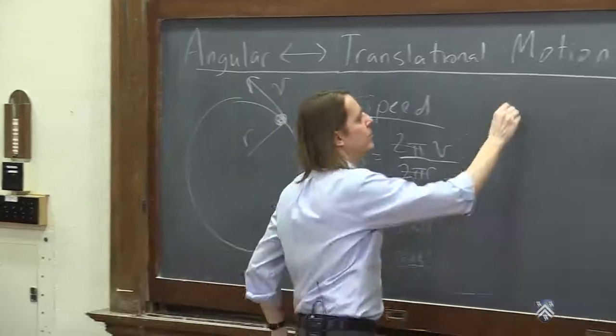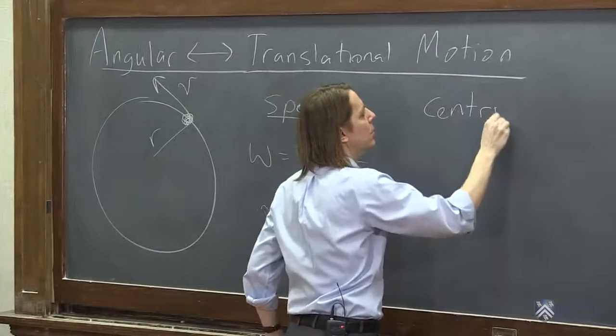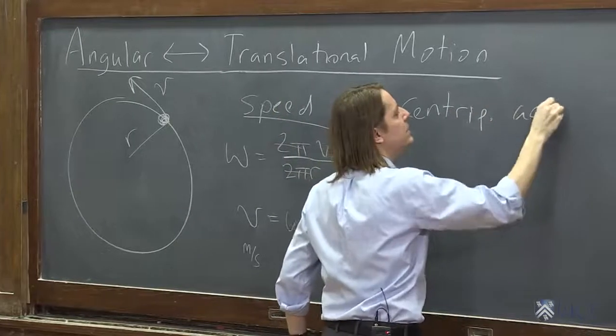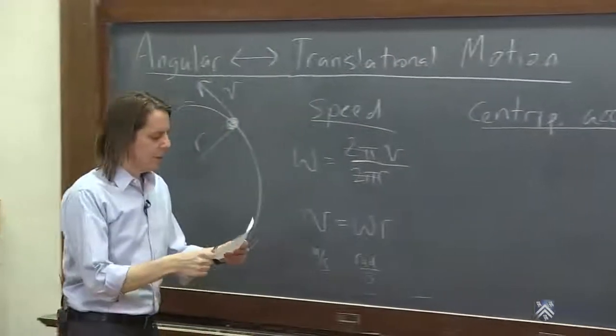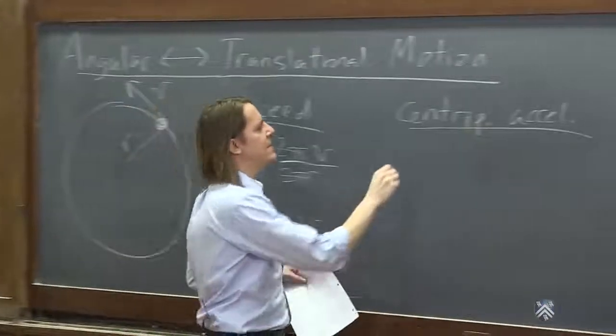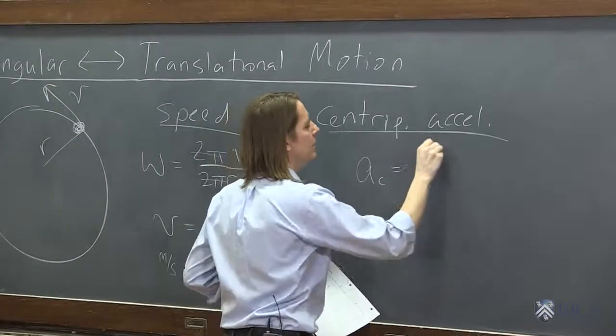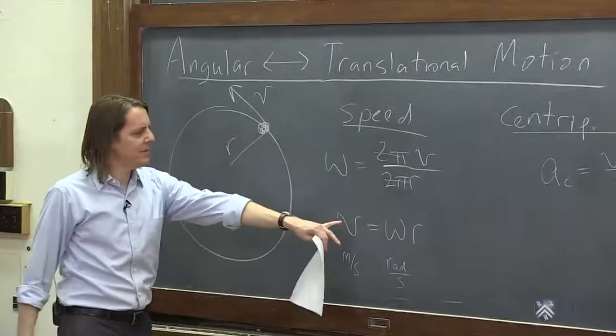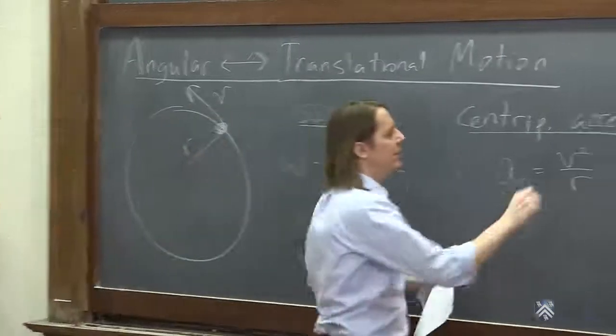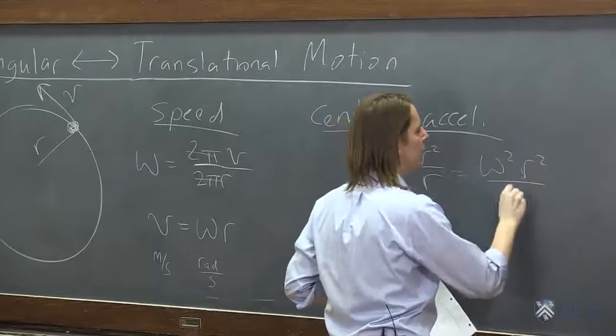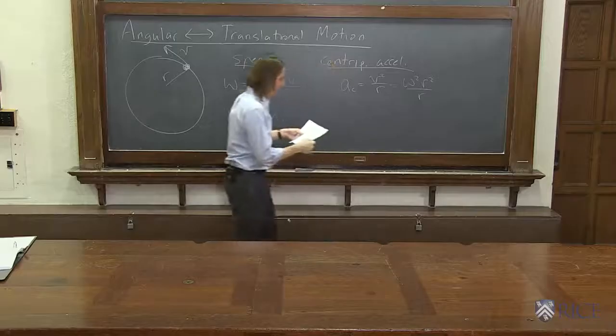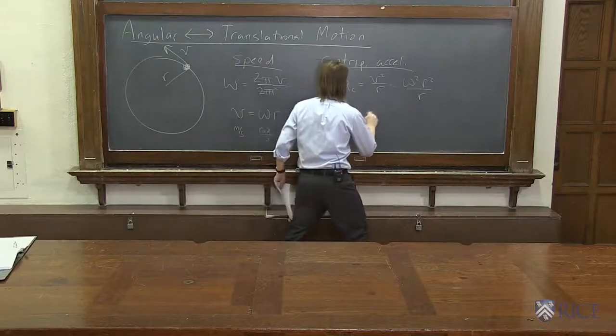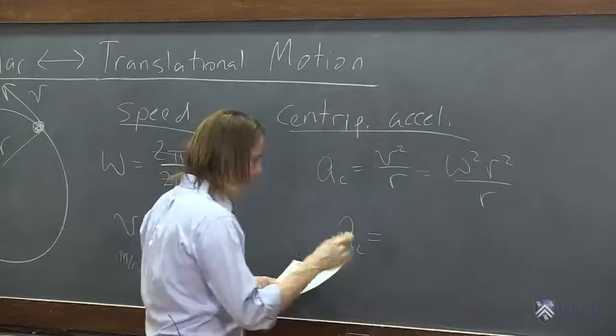We can also do it with the centripetal acceleration. Centripetal acceleration. All right. And we can say, what was it? a_c was v squared over r. But then we could say, oh, but v is just omega r. So that must be omega squared r squared, with an r in the bottom. All right. So then we see that the centripetal acceleration, a_c, is just r omega squared.